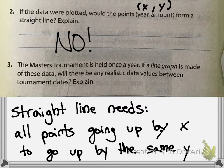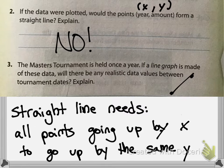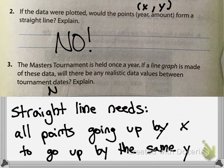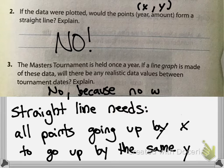Then it asks: if the Master's Tournament is held once a year and a line graph is made of this data, will there be any realistic data values between the tournament dates? If I have one point here and one point here, is there anything in between? No. There is no realistic data because there are no winners between years — nobody wins between tournament dates.